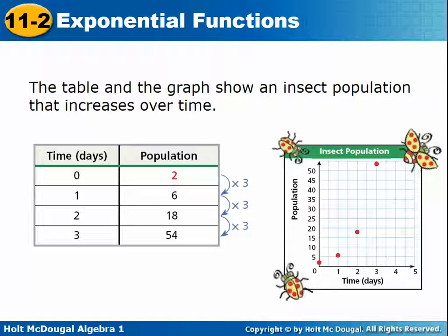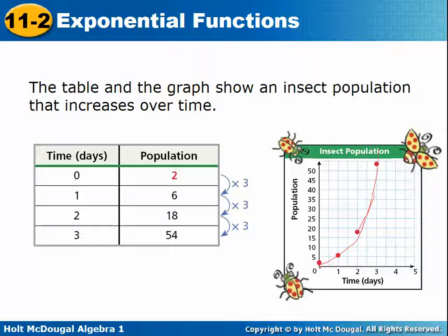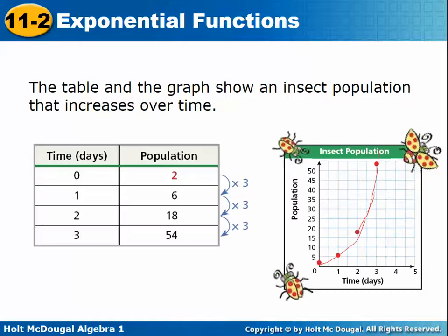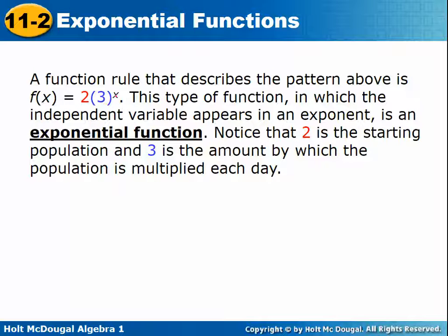So here we have a table. This is time in days versus the population of some insects. You can see that as the days increase in an orderly fashion — each one is plus one — the population is increasing by times three. This is very much like the geometric sequences that we did in 11.1. And if we graph that, we can see that they are increasing not at a linear rate, not at a quadratic rate, but an exponential rate. So it starts out kind of slow and then it starts to increase rather rapidly. This is an example of an exponential function.